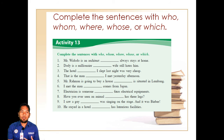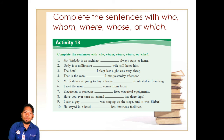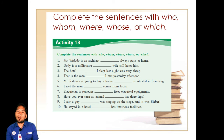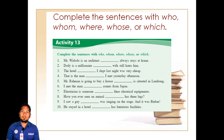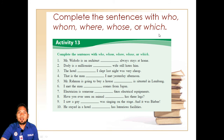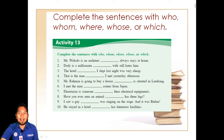Jadi ingat, adjective clause bukanlah kata sifat seperti cantik, tampan, beautiful, handsome, angry, hungry. Yang dimaksud dengan adjective clause adalah gabungan beberapa kata yang memberikan informasi tentang subjek, objek, atau tempat yang dibicarakan. Bisa jadi sebagai subjek, bisa jadi sebagai objek, bisa jadi sebagai tempat. Contohnya menggunakan who, whom, where, whose, or which. Tapi ingat, who, whom, where, whose, or which di sini tidaklah sebagai kata tanya, tetapi sebagai relative clause yang artinya 'yang'.